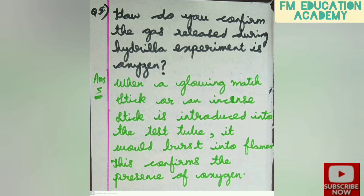Fifth question: how do you confirm the gas released during the hydrilla experiment is oxygen? When a glowing matchstick or an incense stick is introduced into the test tube in which the experiment is performed, it would burst into flames. That will confirm the presence of oxygen.